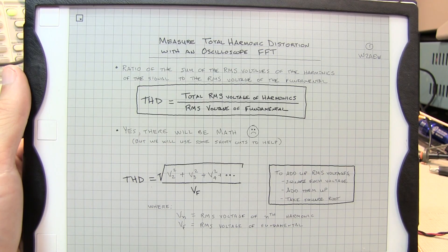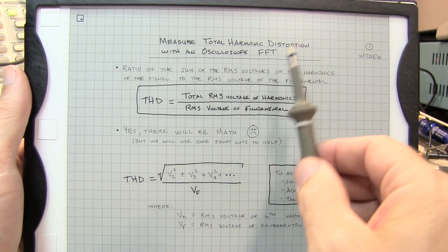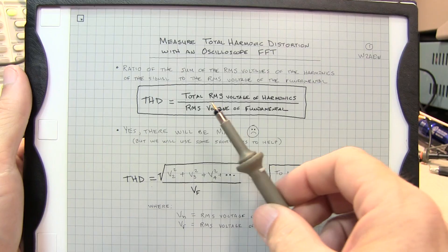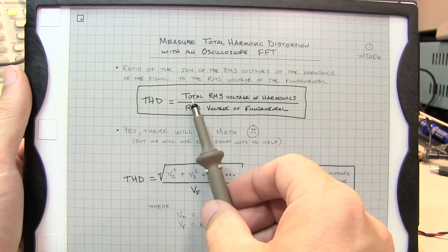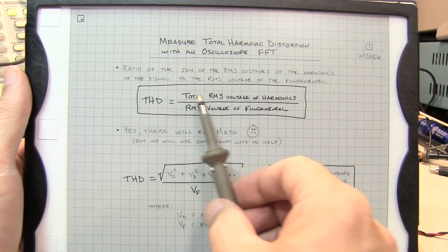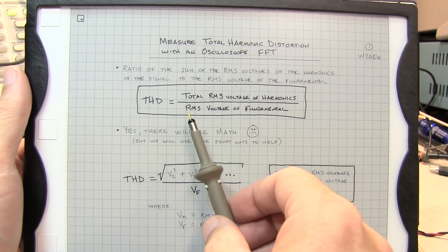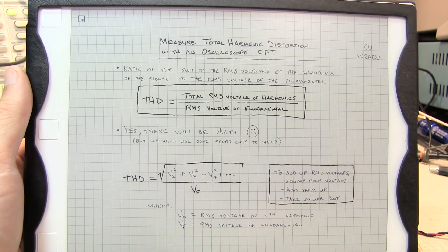So let's start off with the definition here. The total harmonic distortion, or the fundamental total harmonic distortion, is defined as the total of the RMS voltages of all the harmonics divided by the RMS voltage of the fundamental itself.